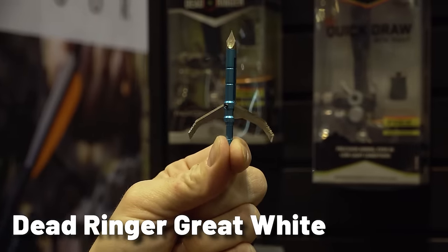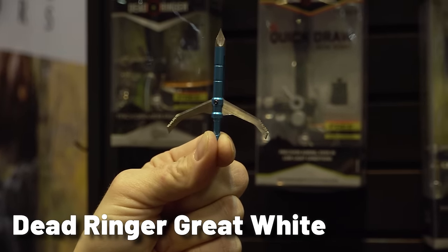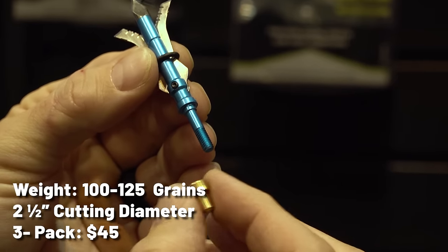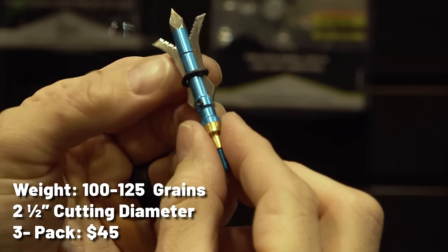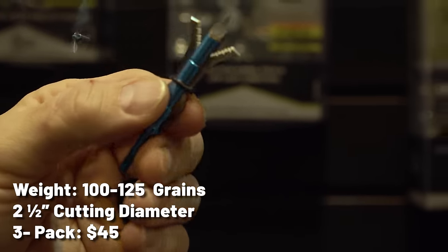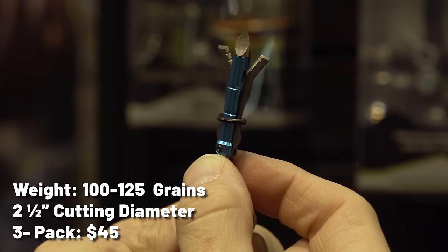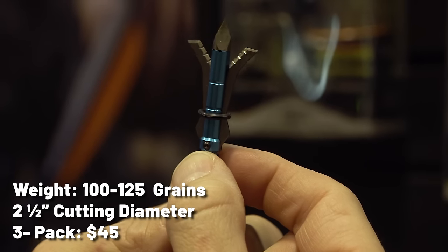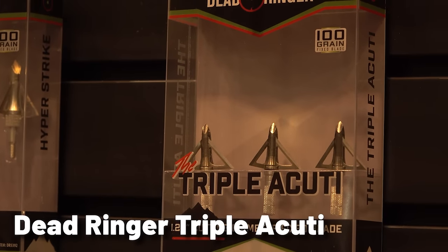Dead Ringer Great White. The new Great White from Dead Ringer is a hybrid-style broadhead that offers a 1-inch cut-on-entry and a massive 2.5-inch cut-on-exit. The Great White comes standard in 100 grains and includes an additional 25-grain collar if you would like to increase the weight. These broadheads are rated for even the fastest crossbows up to 600 feet per second, and thanks to the O-ring design, the blades won't deploy until impact. A three-pack of the Great White broadheads will cost you $45.